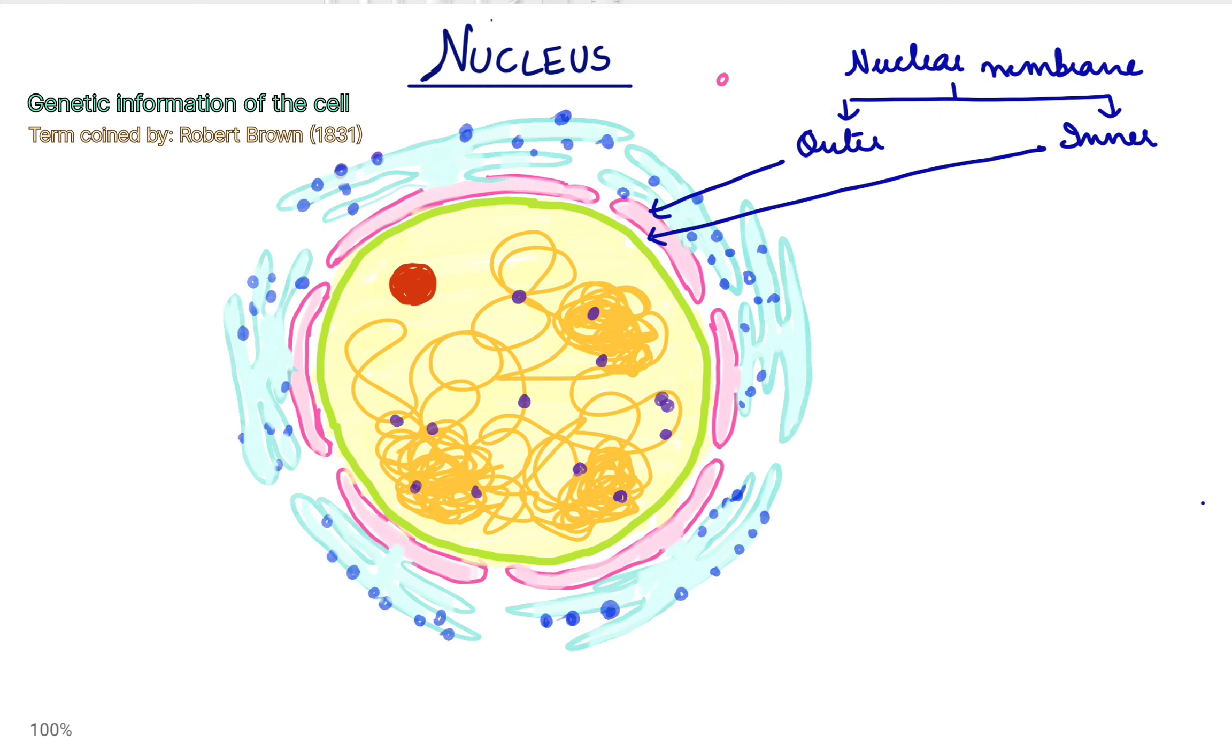The nuclear membrane separates the nucleoplasm from the rest of the cell. The nuclear pores, the spaces in the nuclear membrane, are channels that allow only small polar molecules to pass.